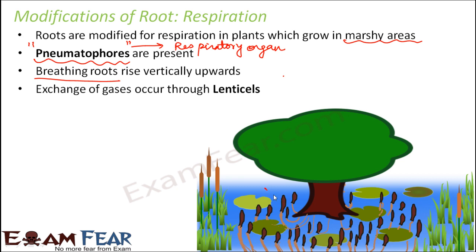Looking at the picture, you can see roots from which pneumatophore structures arise as conical spikes. Their speciality is that they rise vertically upwards and come out of the water. Since there is a lot of water in the swampy area and not enough oxygen below, these spongy, erect pneumatophores grow vertically upward, emerge from the water surface, and obtain abundant oxygen from the atmosphere — that is how the plant receives oxygen.